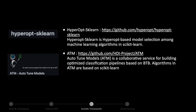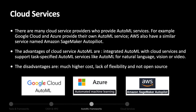There are many cloud service providers offering AutoML services. Google Cloud and Azure provide their own versions of AutoML, and AWS has Amazon SageMaker Autopilot. The advantages of cloud AutoML are the integration with cloud services and support for task-specific AutoML for natural language processing, vision, and video. The disadvantages are higher cost, less flexibility, and not being open source.